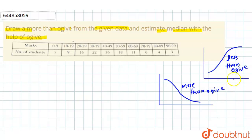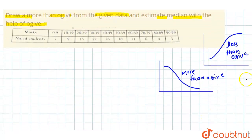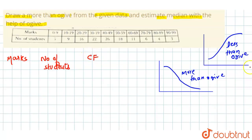In the less-than ogive, we plot the cumulative frequency with respect to the upper class limit. In the more-than ogive, we plot the cumulative frequency with respect to the lower class limit. The lower class values are 0, 10, 20, 30, and so on. We will make a table denoting marks, number of students, and cumulative frequency (CF).